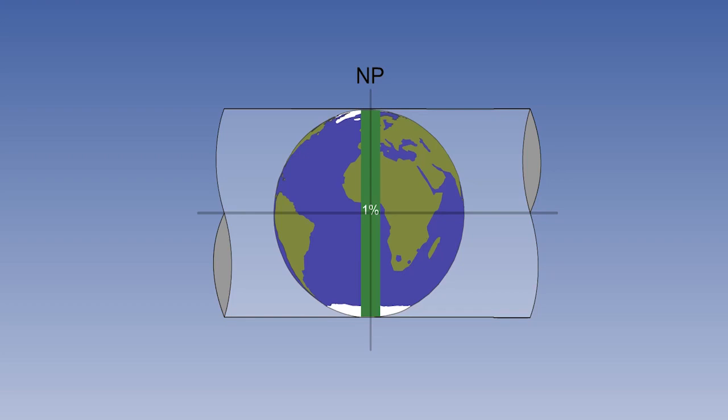There is only one parallel of latitude which is a great circle, whereas there are an infinite number of meridians and their corresponding anti-meridians which can be used for the datum great circle.